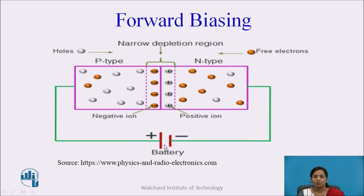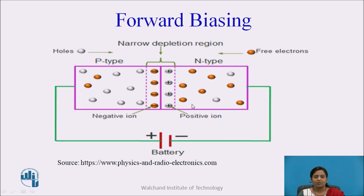As the external voltage increases, the width of the depletion region decreases further, and at one particular voltage the depletion region completely collapses. The majority charge carriers can then cross the junction easily. Due to this movement of majority carriers through the device, the current flows through the device, and that current is called the forward current.